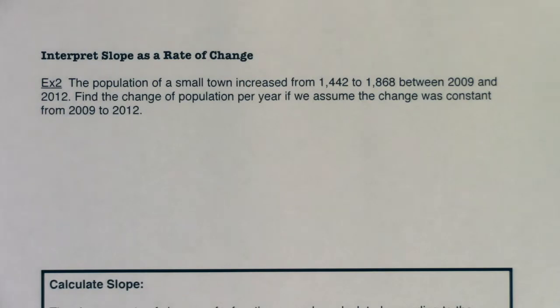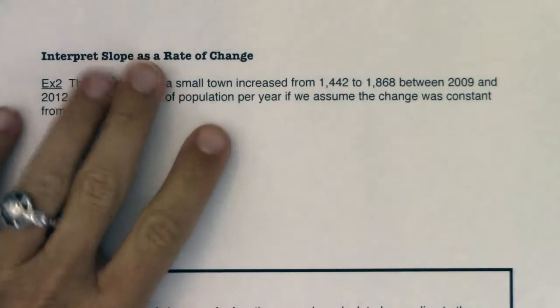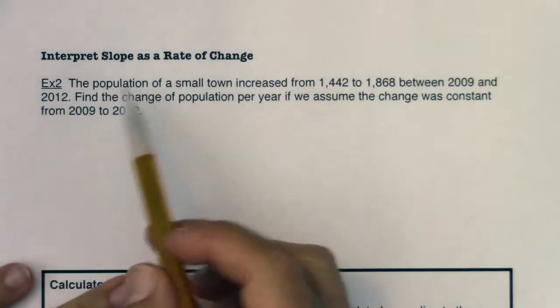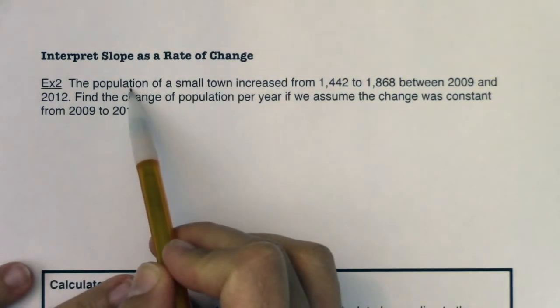Hey MAT31, let's take a look at example two. As promised, I want us to start to interpret slopes as rates of change, which means we're going to practice putting these slopes or explaining what these slopes are in a sentence. So let's get some context. It says the population of a small town